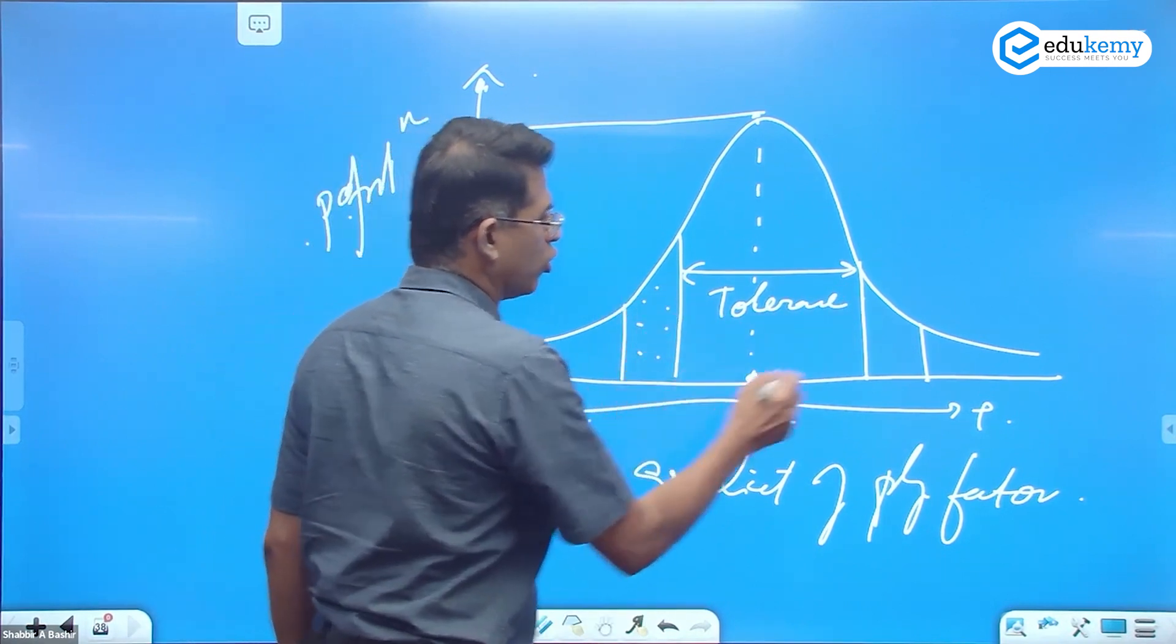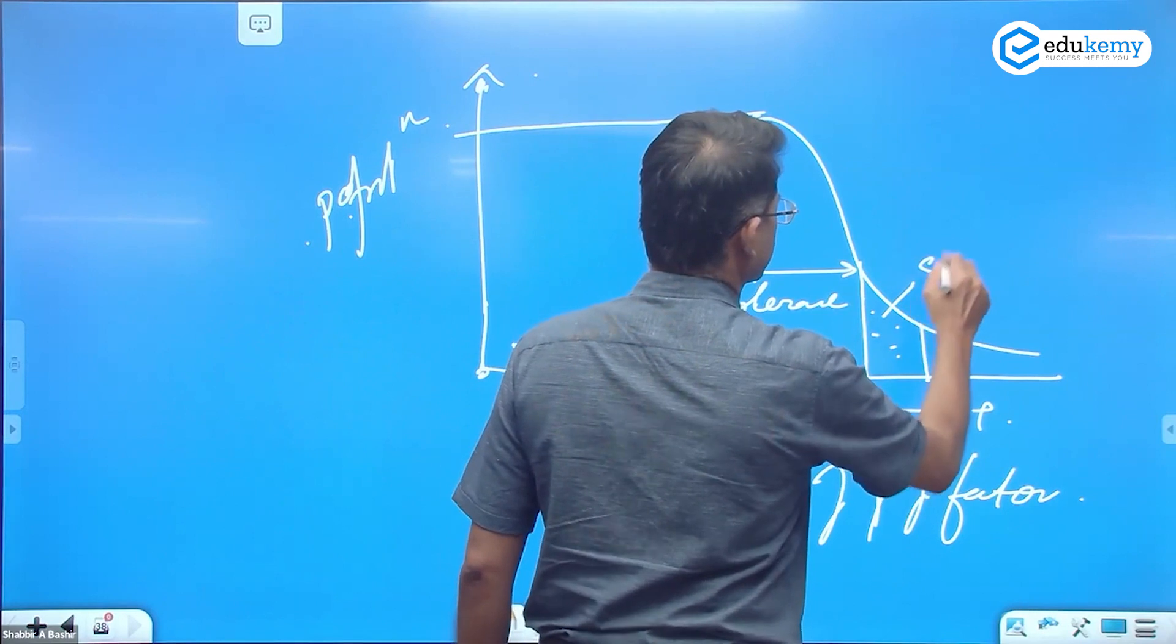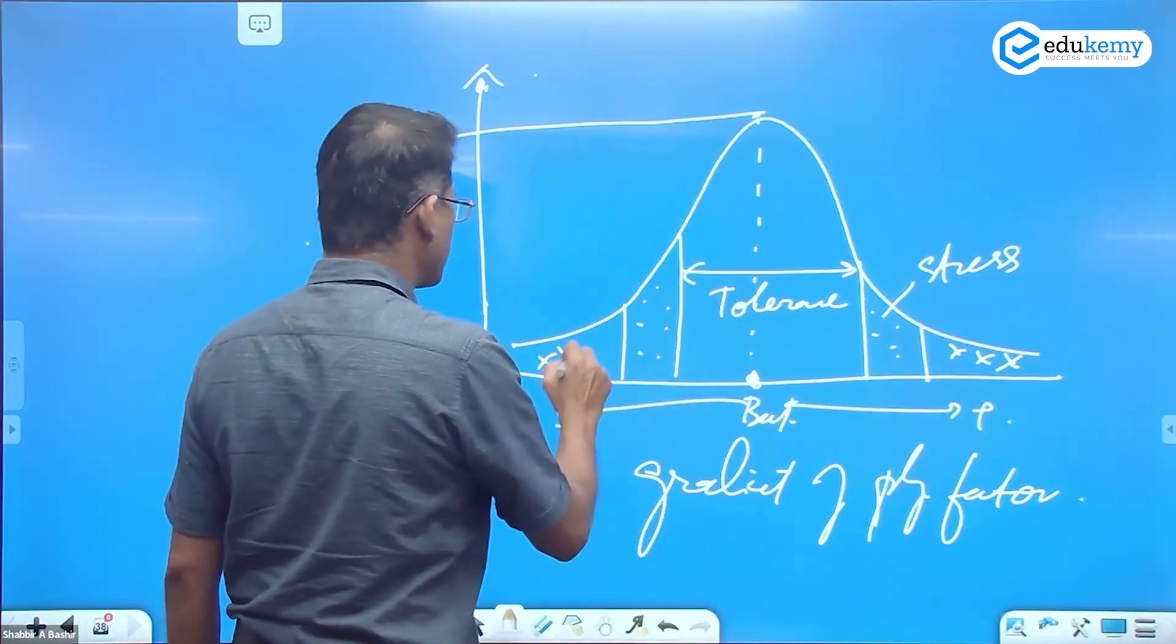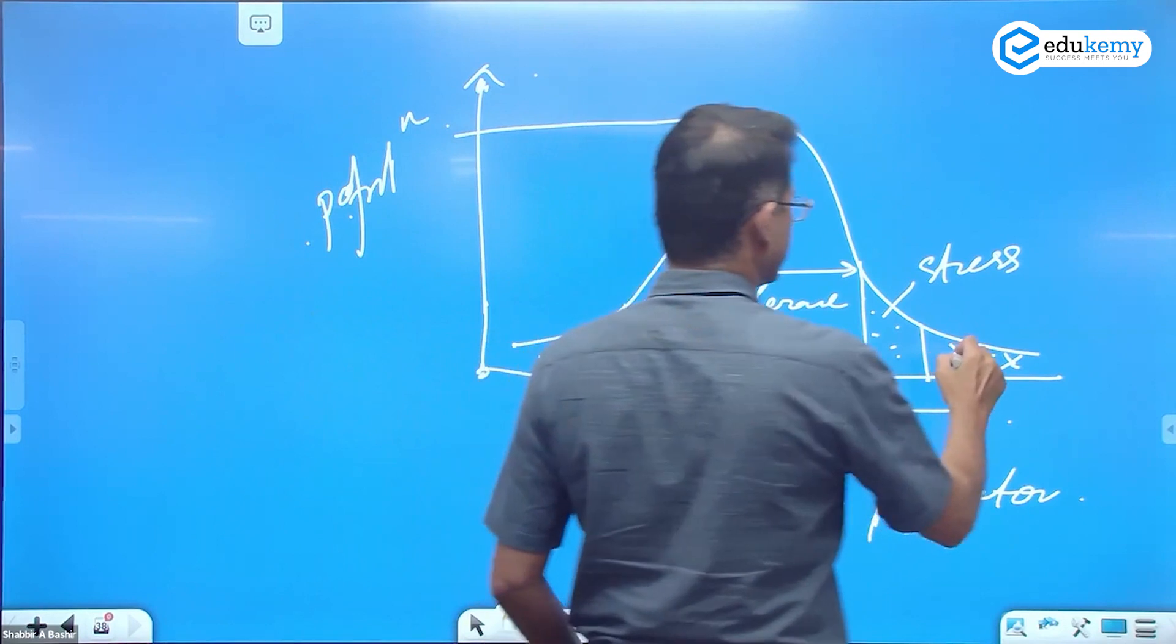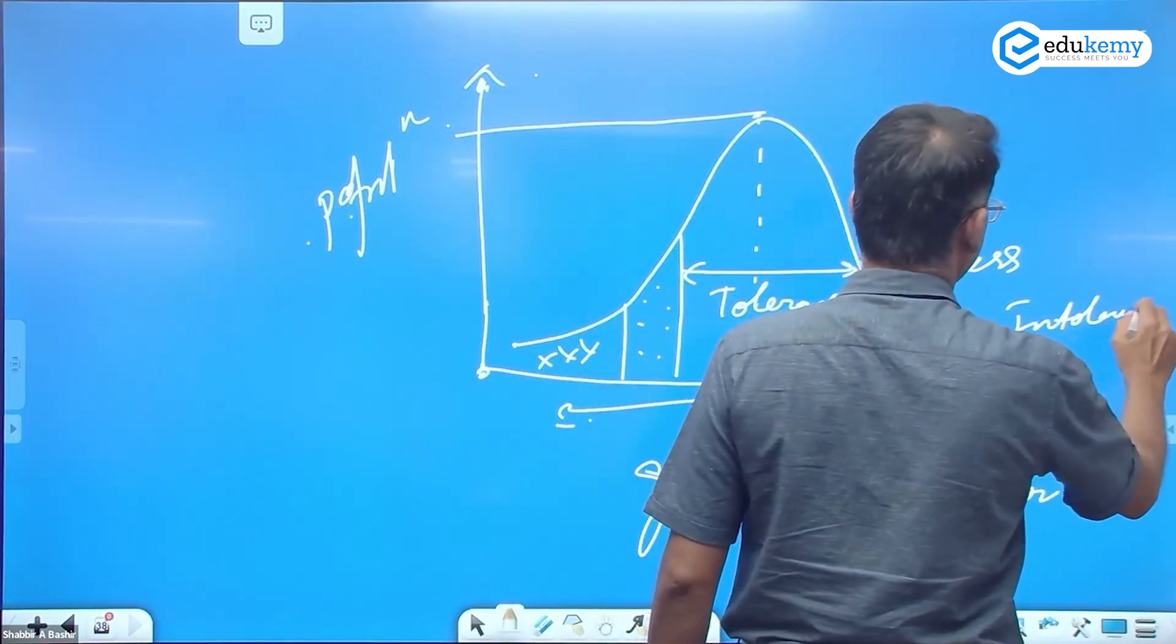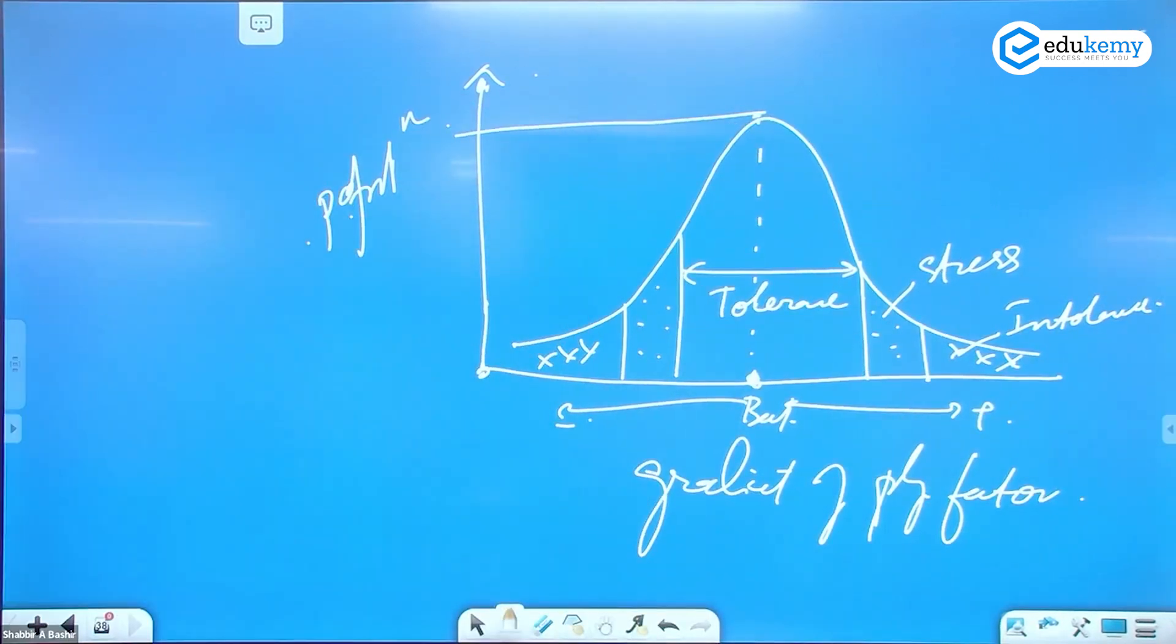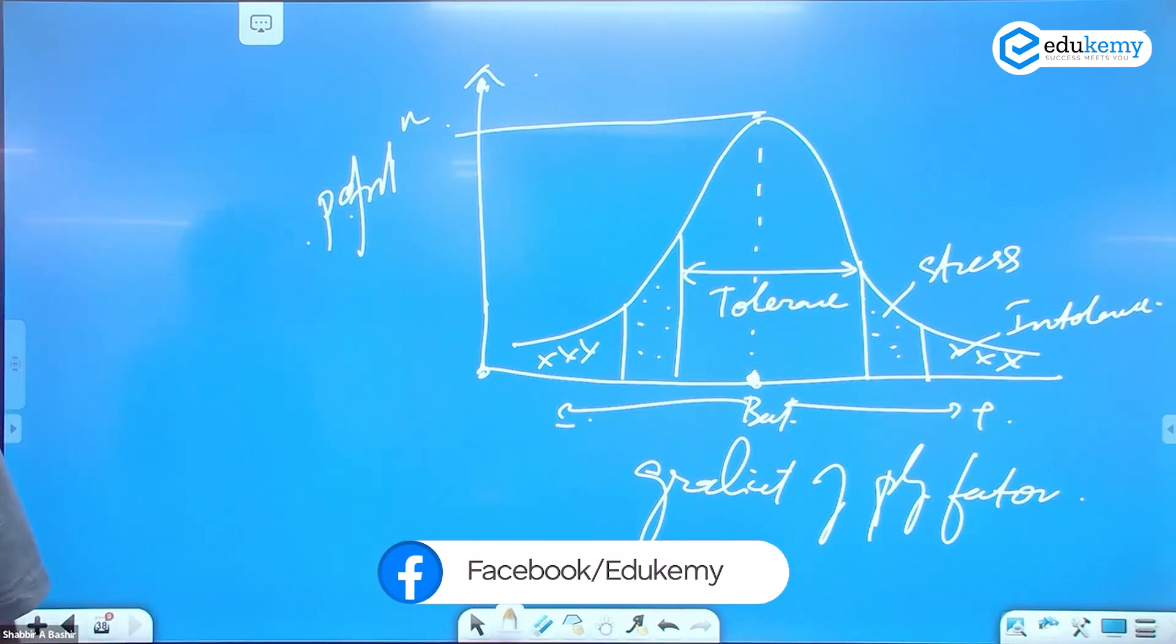This is called as zone of stress and this is called as zone of intolerance. They'll die here. This is the zone of intolerance. Shelford's law in terms of population plot against the gradient of physical factors.